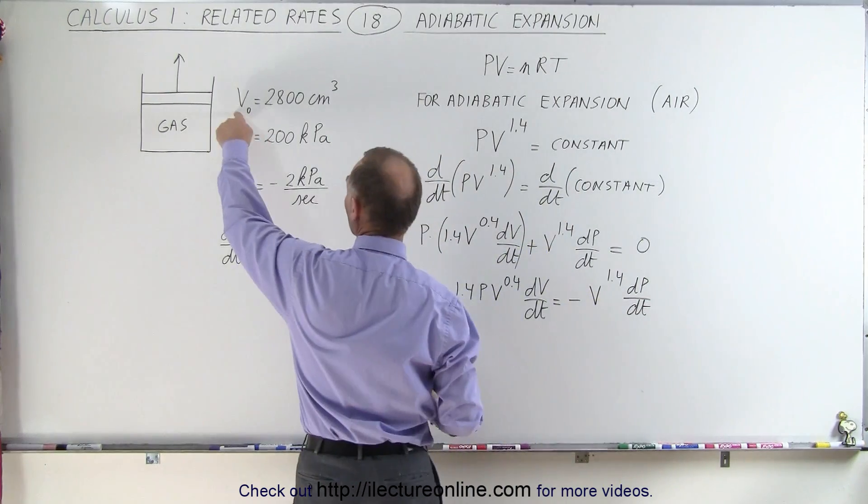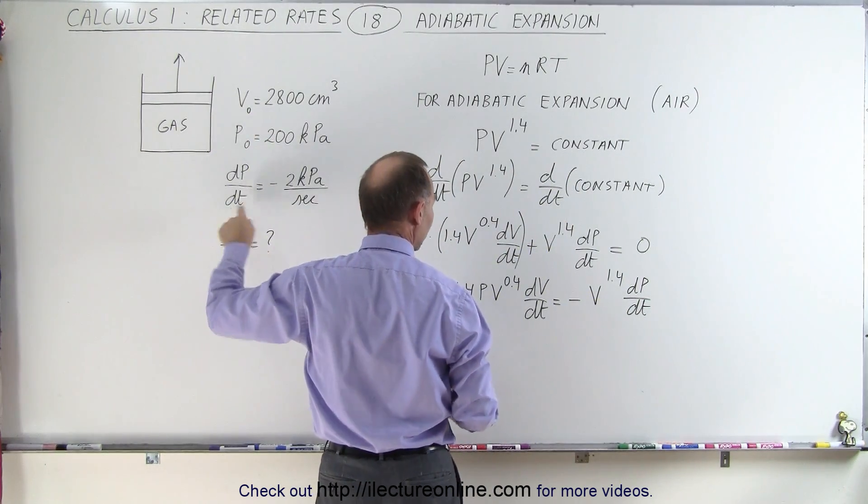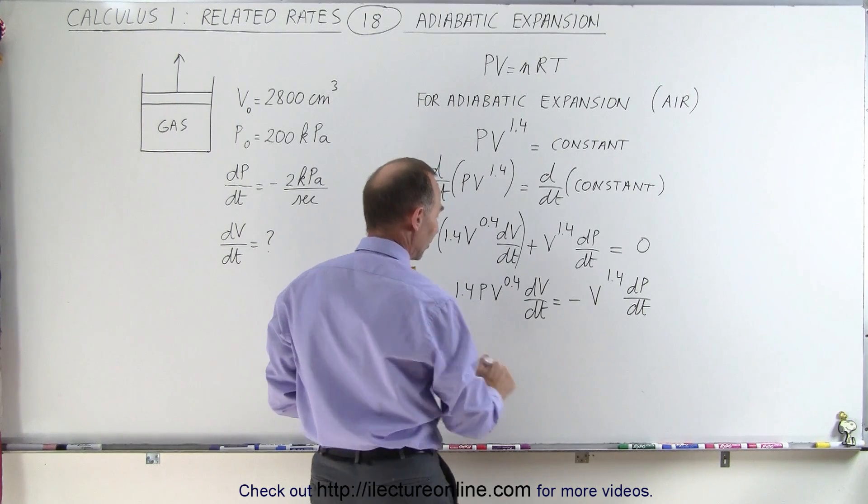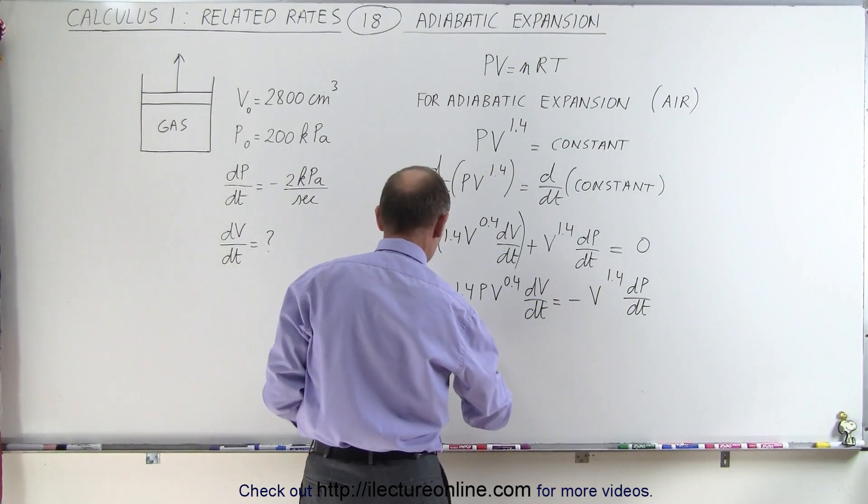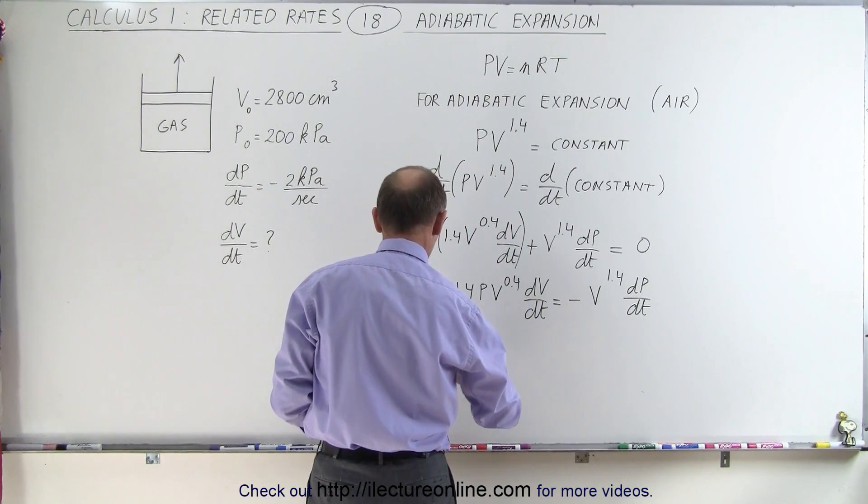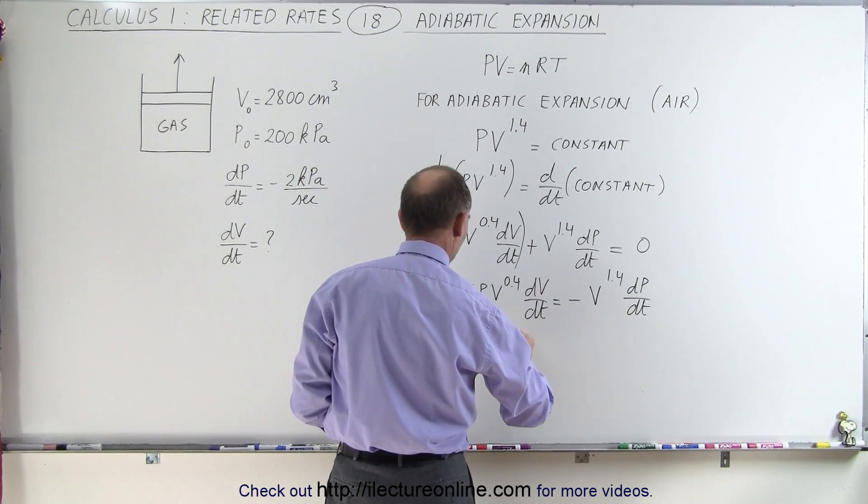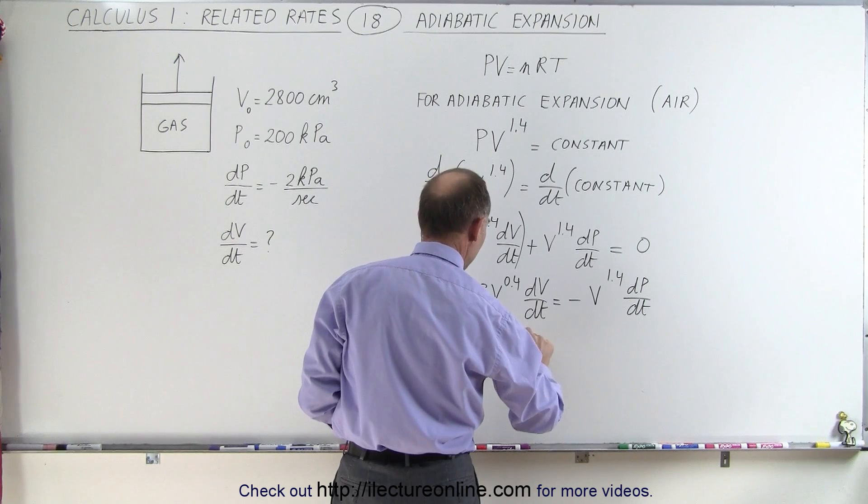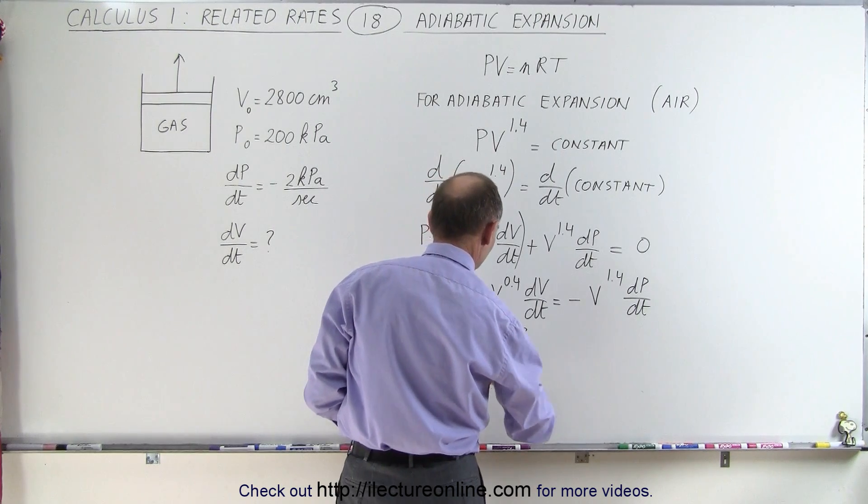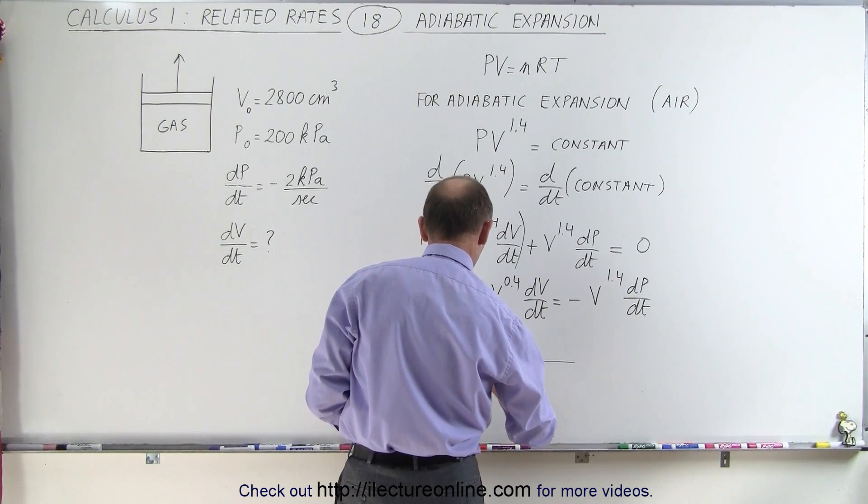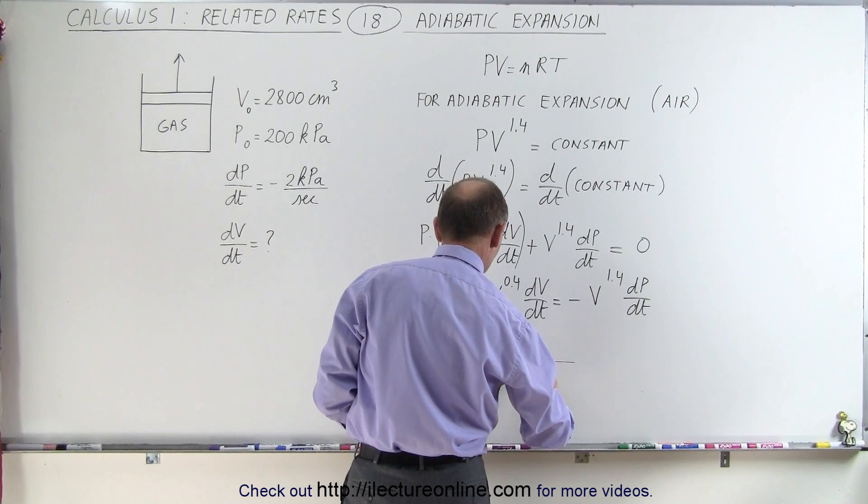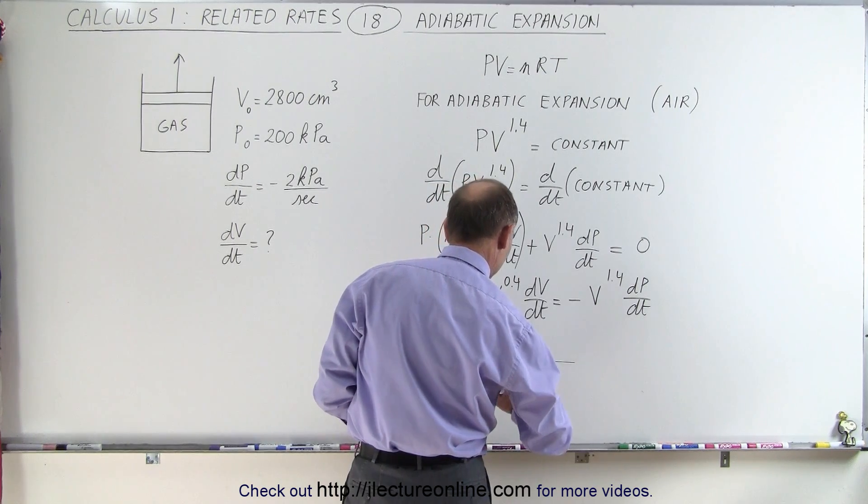We know what the volume is and we know what dP/dt is. So if we divide everything by this, we get dV/dt equals V to the 1.4 power times dP/dt divided by 1.4 P times V to the 0.4 power. That's the coefficient of dV/dt.